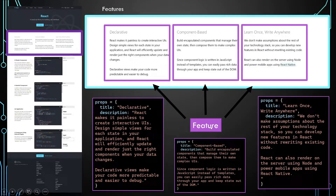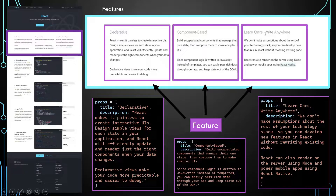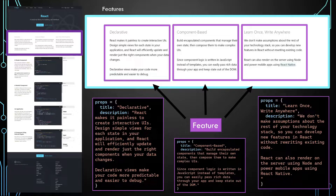In our case, all are similar feature components, and this feature component is given different props for each case. For the first case the title is 'Declarative', so it shows 'Declarative' as output; for the second, 'Component Based'; for the third, 'Learn Once Write Anywhere'. The descriptions of each component are also totally different, so the output is different every time, but the components are exactly the same — only the props are different.